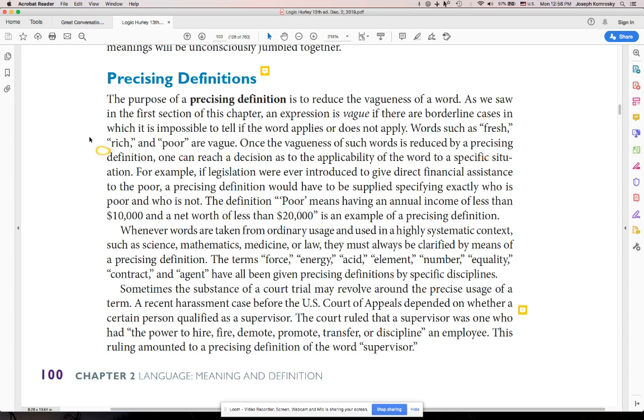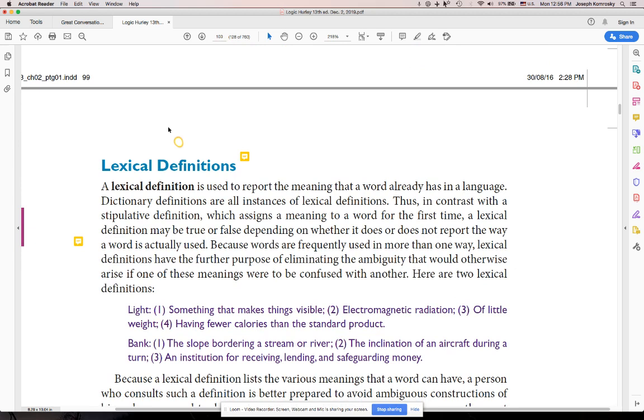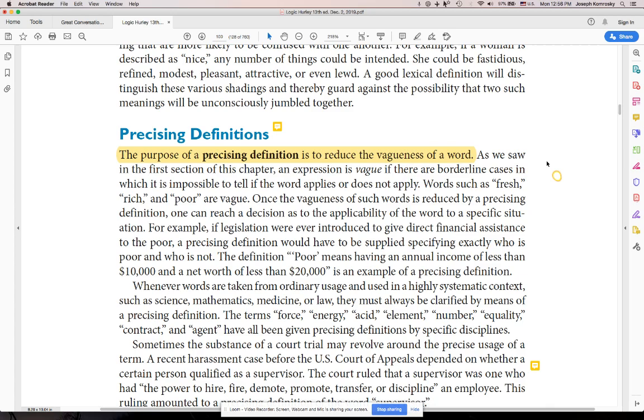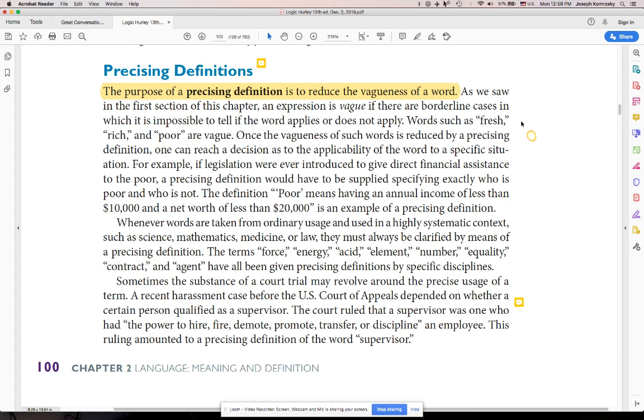Precising definitions. The purpose of a precising definition is to reduce vagueness of a word. I've highlighted a little sentence in the lexical part, avoiding ambiguity and the precising part, avoiding vagueness, because that's the most important thing about these. Precising, they avoid vague terms and they give you a lot more detail.